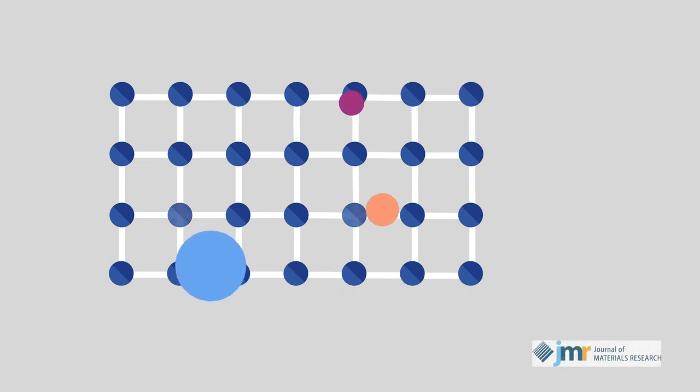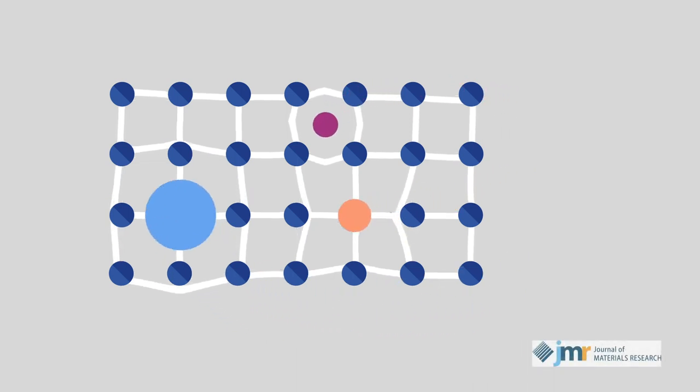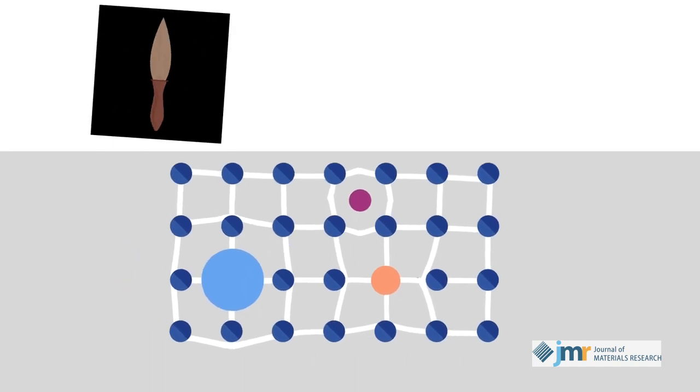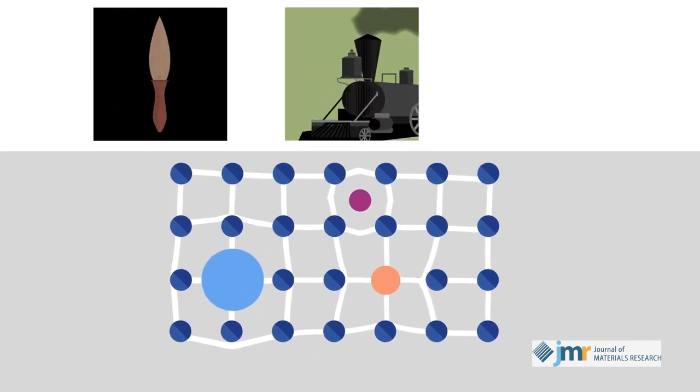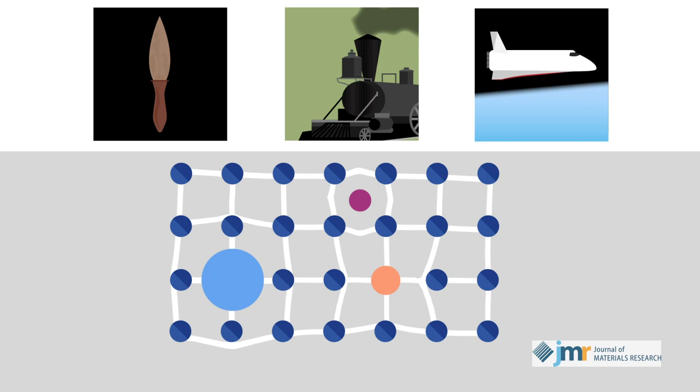For more than 5,000 years, metals and alloys have been formed in roughly the same way, propelling civilization from the Bronze Age to the Industrial Revolution and to the Aerospace Age.